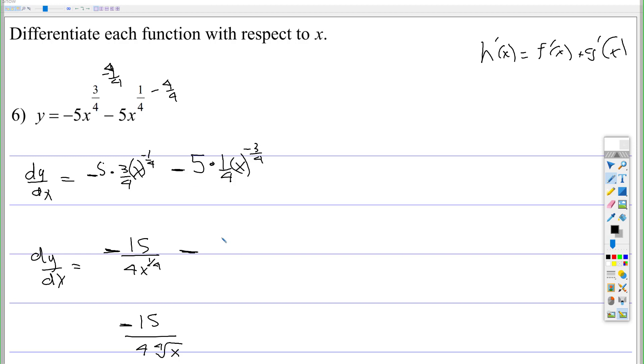Then we have negative 5 times 1 fourth, which is negative 5 fourths, and then the x to the negative 3 fourths gets brought down, and either is written like that, or is written like this, x, the fourth root of x cubed. So either one of these forms works, but this would be the process.